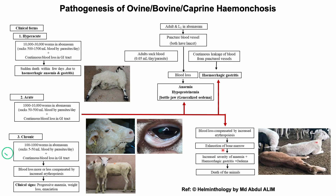Blood loss in chronic conditions is less. Affected animals are able to compensate for the blood loss by increased erythropoiesis. Clinically, affected animals show signs such as anemia, progressive weight loss, and become lethargic and emaciated.